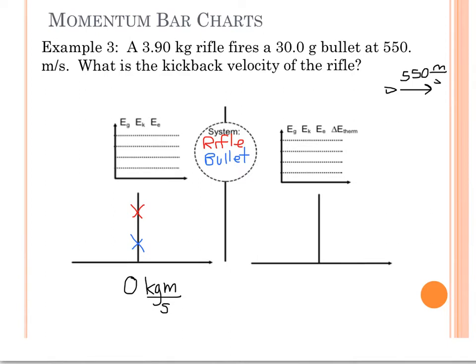And it asks, what's the kickback velocity of the rifle? So we've got a rifle, whatever fired the bullet, and the rifle must be going the other direction. I know it must be going the other direction because the only way to have two objects in a system with a total momentum of zero is for the two objects to be moving in opposite directions.